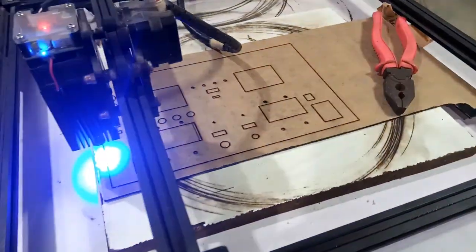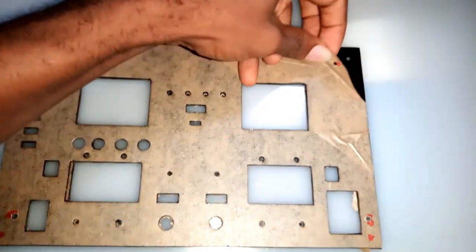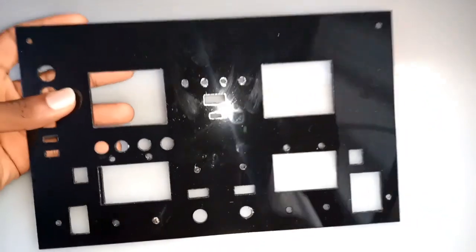The laser cutting process took a lot of time before I could get a complete cut. I carefully removed the paper protection for the cut acrylic frame as I further applied the spray paint to suit the color that I want.